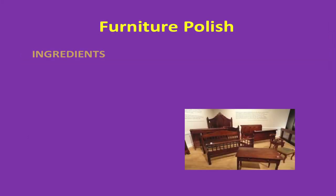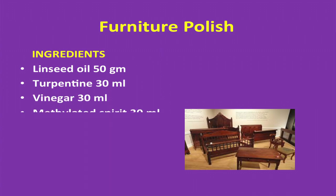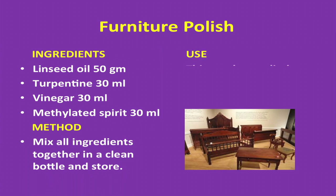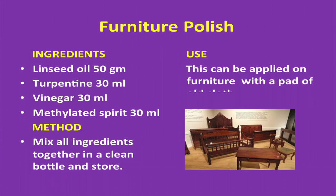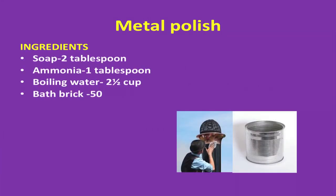Furniture polish recipe two — ingredients: linseed oil 50 grams, turpentine 30 ml, vinegar 30 ml, methylated spirit 30 ml. Method: mix all ingredients together in a clean bottle and store. Use: this can be applied on furniture with a pad of old cloth.